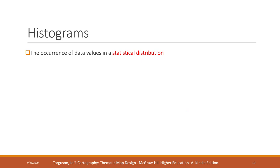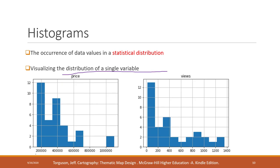A histogram is a visualization that shows the statistical distribution of a single variable. The X-axis represents the range of values and the Y-axis represents the occurrence of data values within a specific range. Here we can see that most records fall within one range, with about nine records in another range.